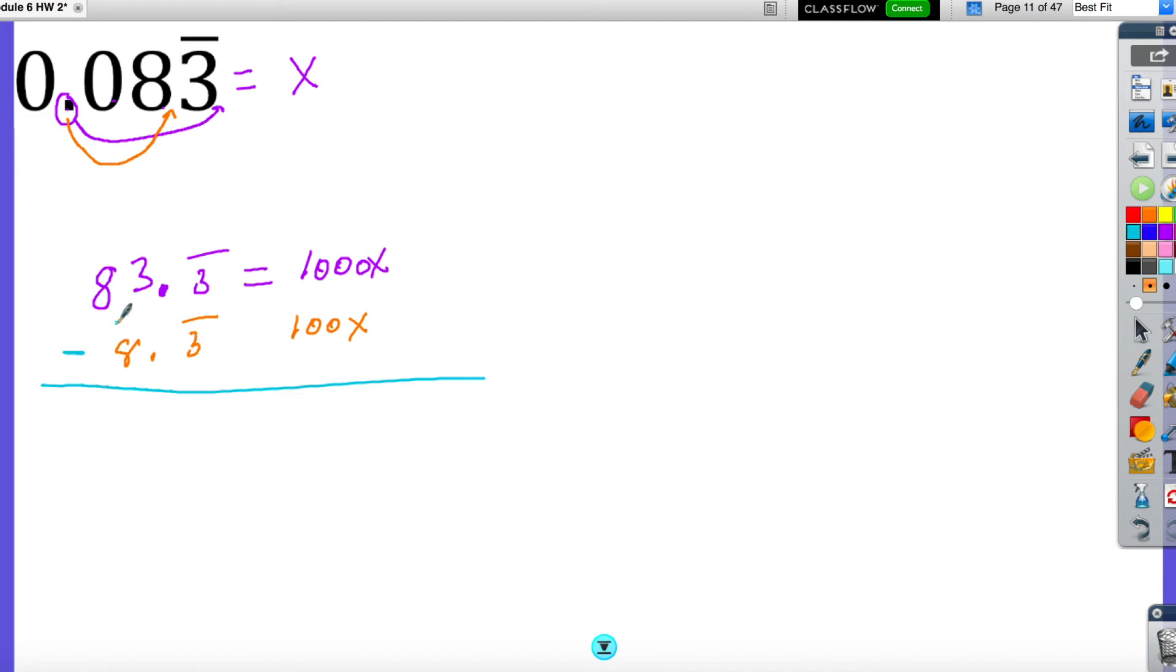Once this happens, we are going to subtract the two numbers. So if I do 83.3 minus 8.3, that is going to give me... let me fix that really quickly, 75 equals 900x.